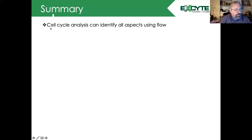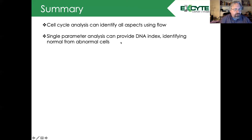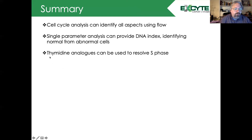In summary, cell cycle analysis by flow cytometry can identify all the different phases of the cell cycle based upon the dyes and combination of dyes used. Single-parameter analysis provides a DNA index for identifying normal from abnormal cells, and is a very good way to test whether a drug of interest may be causing cells to pause at a given cell cycle state. If we want to resolve the S phase, we use thymidine analogs like BrdU and EdU, which are incorporated into synthesizing DNA and detected either using an antibody or the Click-iT kit.